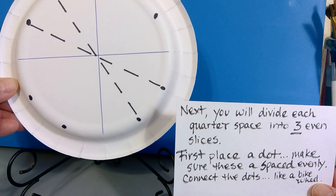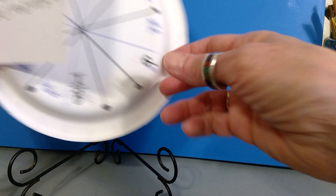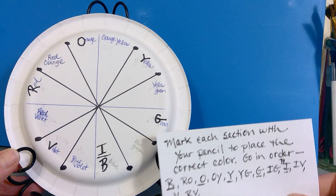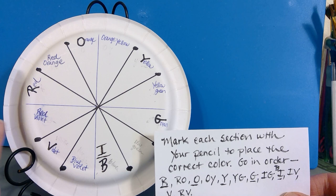You're going to then mark each section with the color. You want to use a pencil first because, of course, that gives you a chance if you need to correct it, you can correct it.